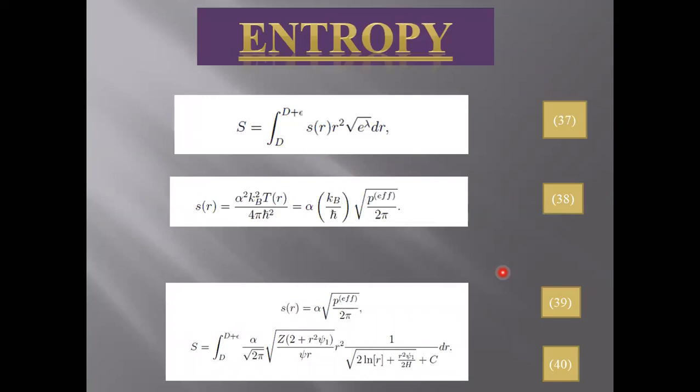Entropy is the measure of disorderness. Low entropy means low disorderness. According to Mazur and Mottola, entropy density is zero in the interior region, but in the shell the formula is given by Mazur and Mottola in equation 37. Sᵣ is the entropy density.